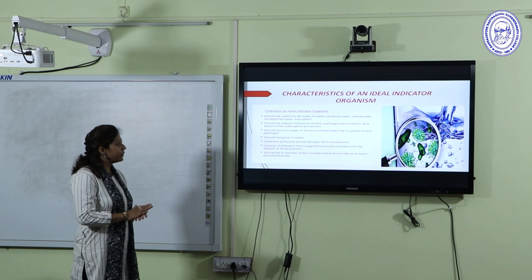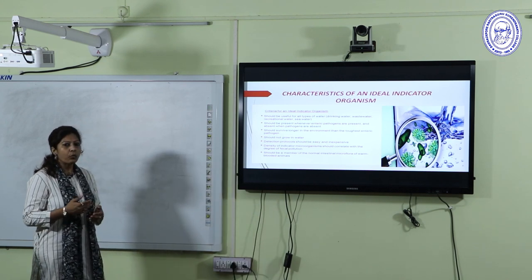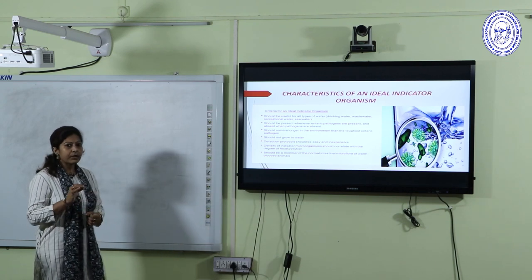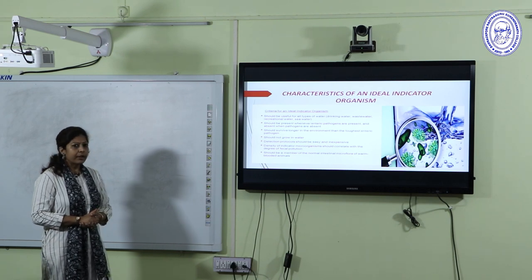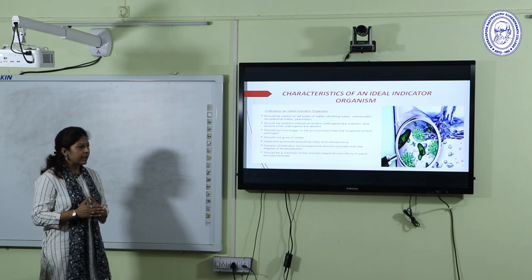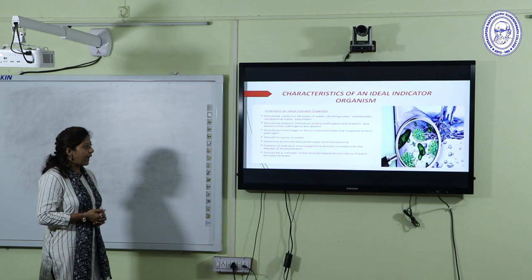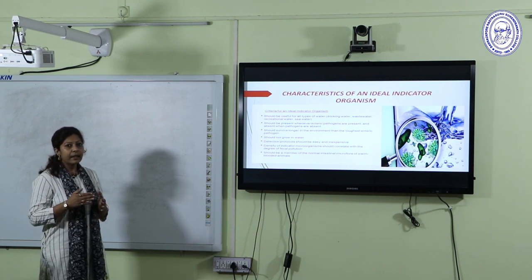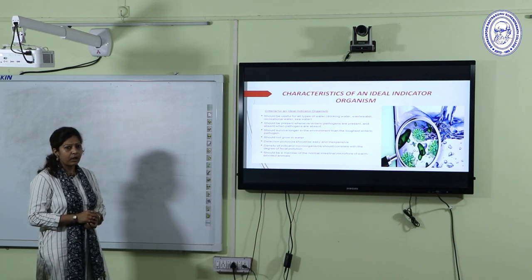The characteristics of an ideal indicator organism are: it should be useful for all types of water — drinking water, waste water, or recreational water; it should be present whenever intestinal pathogens are present and absent when they are absent; it should survive longer in the environment but not grow in water bodies, with survival time greater than that of the toughest enteric pathogen; its detection should be easy and inexpensive; and it should be the intestinal microflora of warm-blooded animals.